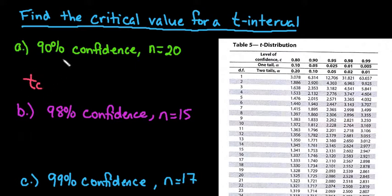In order to find this, we have to find our level of confidence. So we would rewrite this as a decimal, 90% would be 0.9, and then we have to find our degrees of freedom. So our degrees of freedom is always our sample size minus 1. So in this case if I do 20 minus 1, I would get 19.